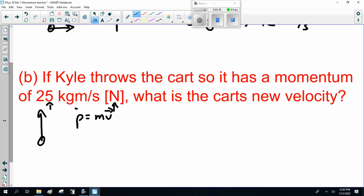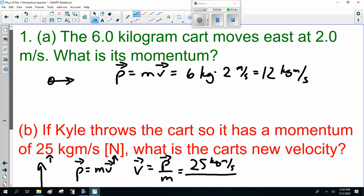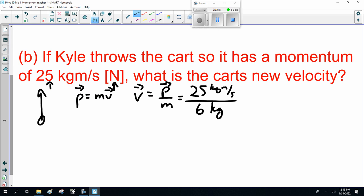If Carl throws the cart so it has a momentum of 25 kilogram meters per second north, what's the cart's new velocity? Notice it is a vector with direction and amount. Momentum is mass times velocity, and we're looking for the new velocity. So velocity equals momentum divided by mass. The new momentum is 25 kilogram meters per second, the mass is still 6 kilograms, so that comes out to 4.17 meters per second, or 4.2 meters per second depending on how you round it off. Probably two significant digits based on the 25 kilogram meters per second.